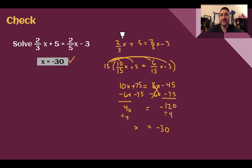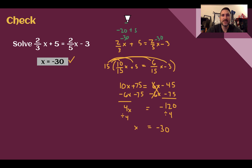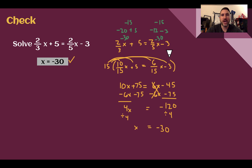We should plug in and verify. Substituting negative 30 for x: 2/3 of negative 30 gives negative 20, and plus 5 is negative 15 on the left side. For the right side: 2/5 of negative 30 — dividing by 5 gives 6, times 2 is negative 12 — minus 3 is also negative 15. Both sides equal negative 15, so the equation is true and the answer is confirmed.